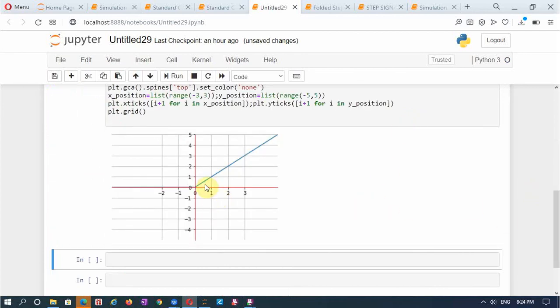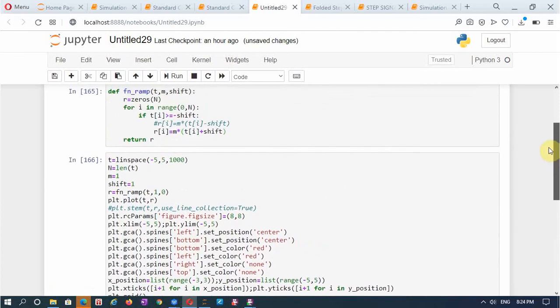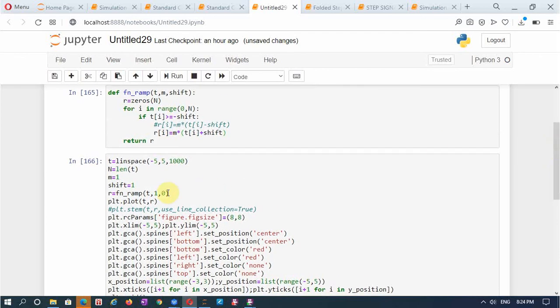This is the unit ramp signal, unit ramp because the slope is 1. When x increases by 1 the y is also increasing by 1. This is a ramp signal with unit slope and I can change the shift to any value.